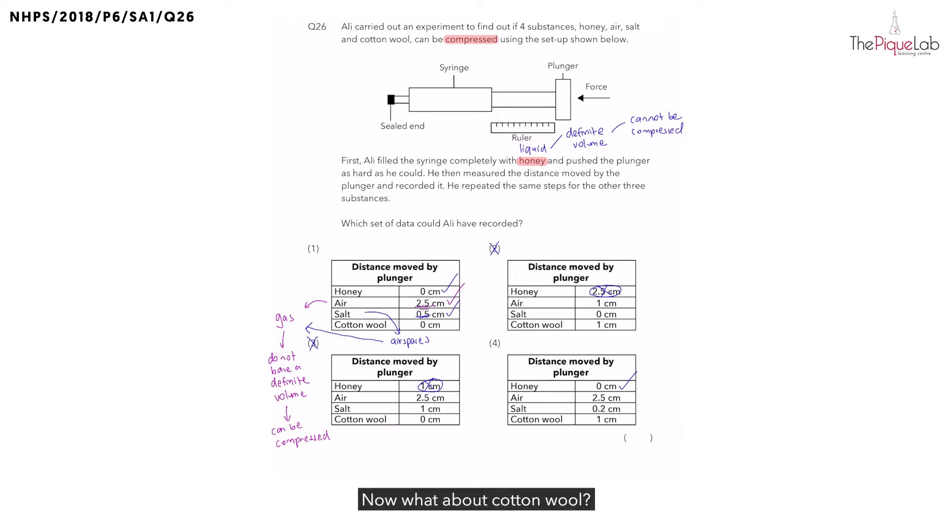Now, what about cotton wool? Similar to salt, there are also air spaces inside the cotton wool, which means can the plunger be pushed in? Yes, right? Which means the distance moved by the plunger, should it be 0 or more than 0? It should be more than 0. However, the table shows that the distance moved is 0 cm. Now, is that possible? No. So, we can cross out option 1.